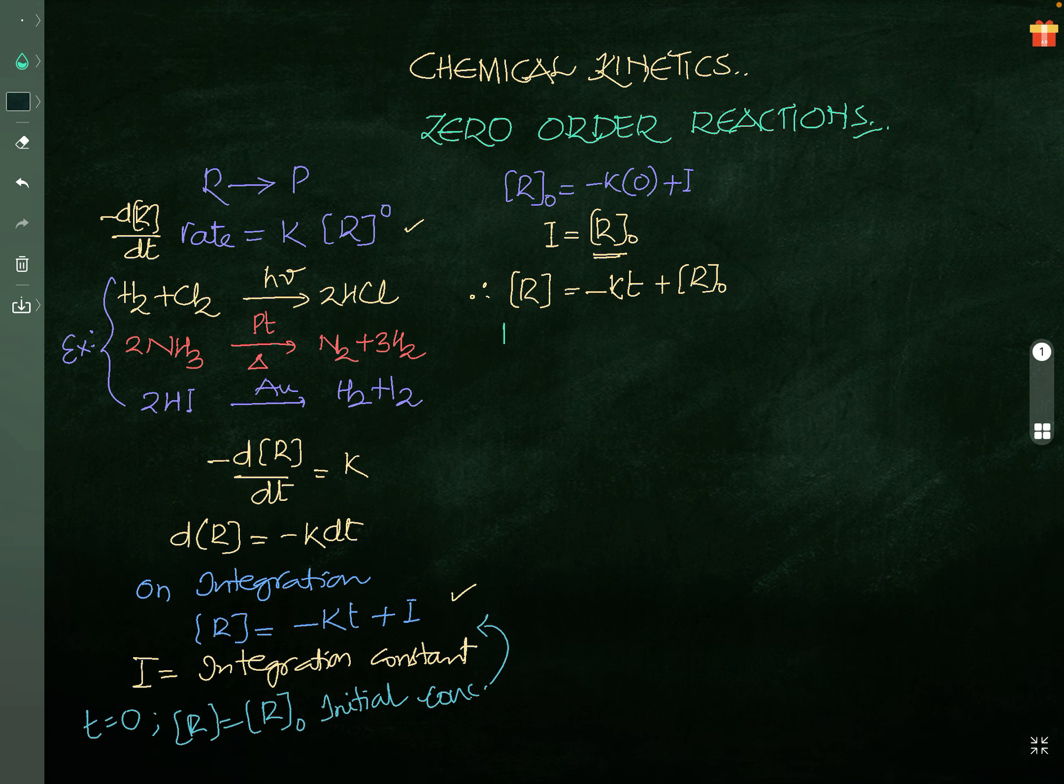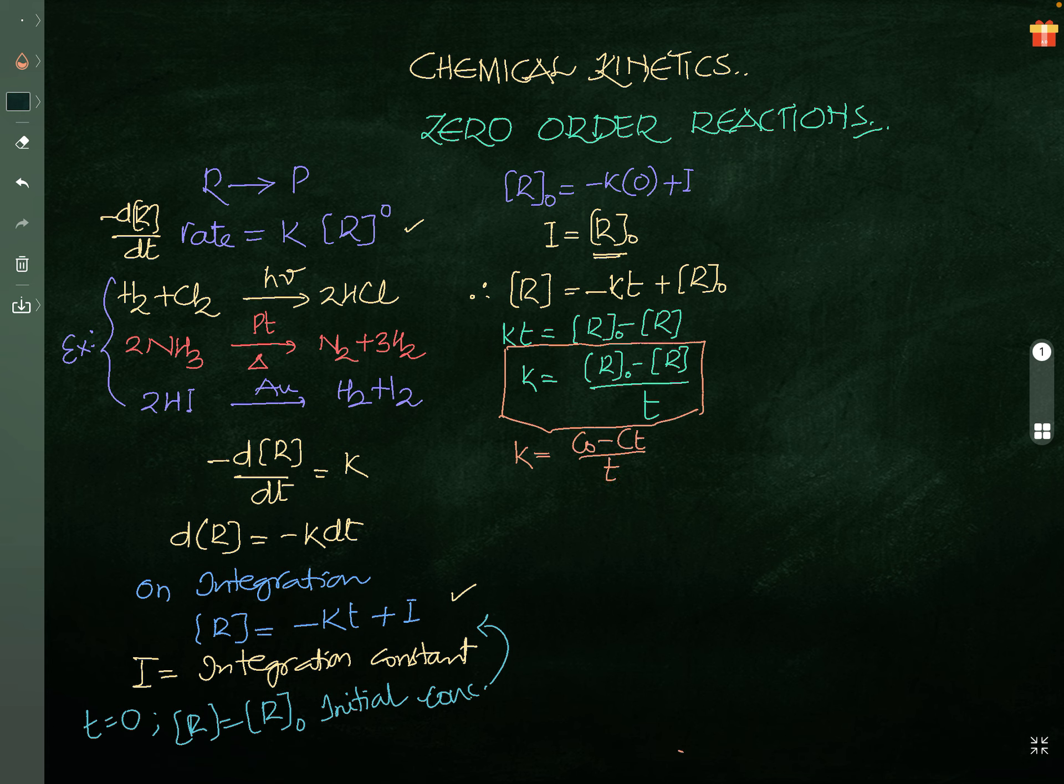R equals minus KT plus I. In place of I, you can write R0. Now KT if I am writing this side, it will become R0 minus R, or K equals R0 minus R by T. This is called integration rate equation for 0 order. Where R0 is initial concentration, R is concentration at T time, T is time. In majority books like GRB publications, we generally see K equals C0 minus Ct by T. Meaning is same. C0 is initial concentration, Ct is concentration at T time, T is time.